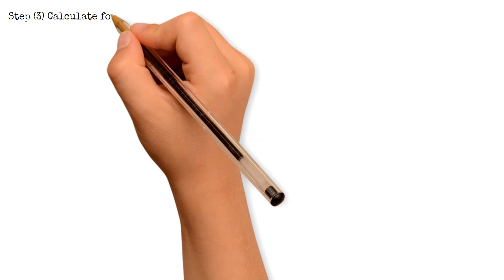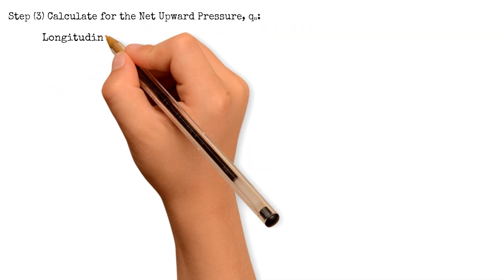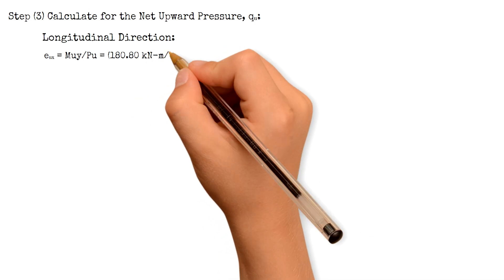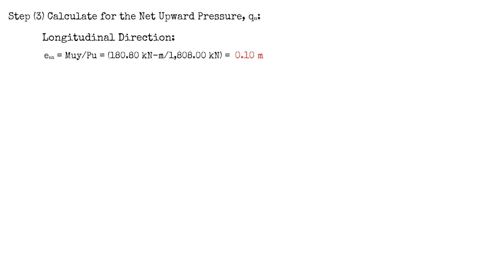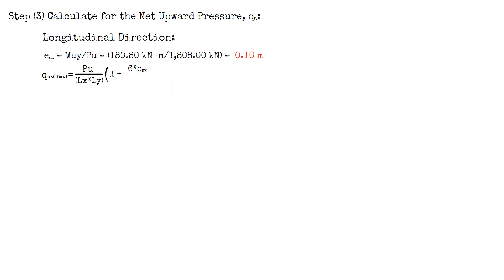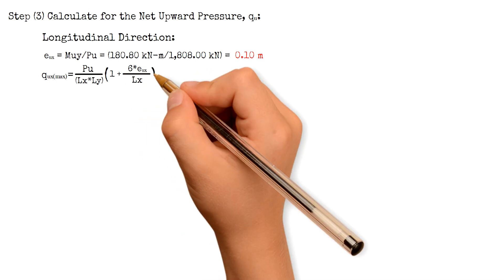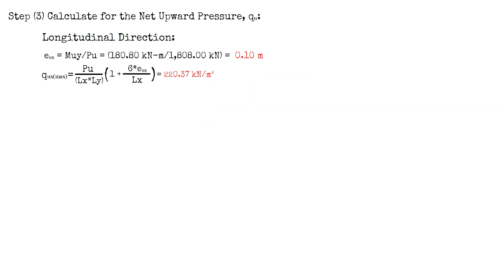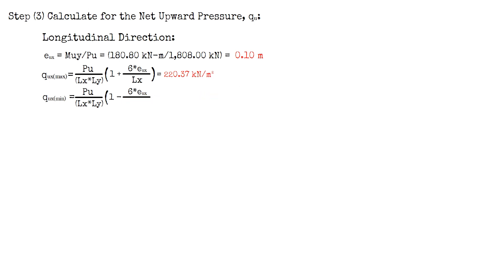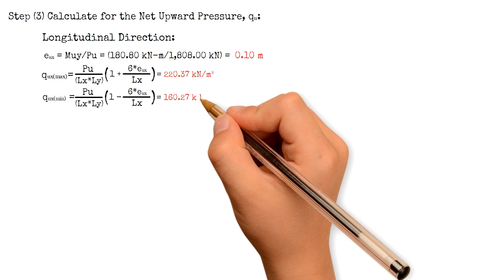Moving on to Step 3, we calculate the net upward pressure Q_U. For the longitudinal direction, the eccentricity EX with respect to the ultimate loads equals MUY divided by PU, and since it is also less than L over 6, the soil pressure is trapezoidal. The maximum net upward pressure Q_Ux_max equals 220.37 kN per m² and the minimum Q_Ux_min equals 160.27 kN per m².